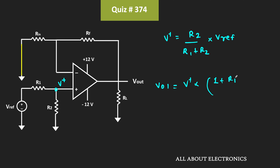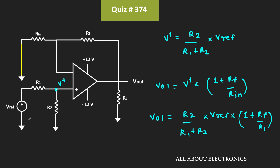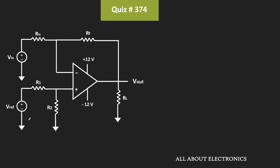Substituting the value of V+, we get Vo1 equal to (R2 divided by (R1 plus R2)) times Vreference times (1 plus Rf divided by Rin). This is the output voltage of the op-amp when Vreference is acting alone.